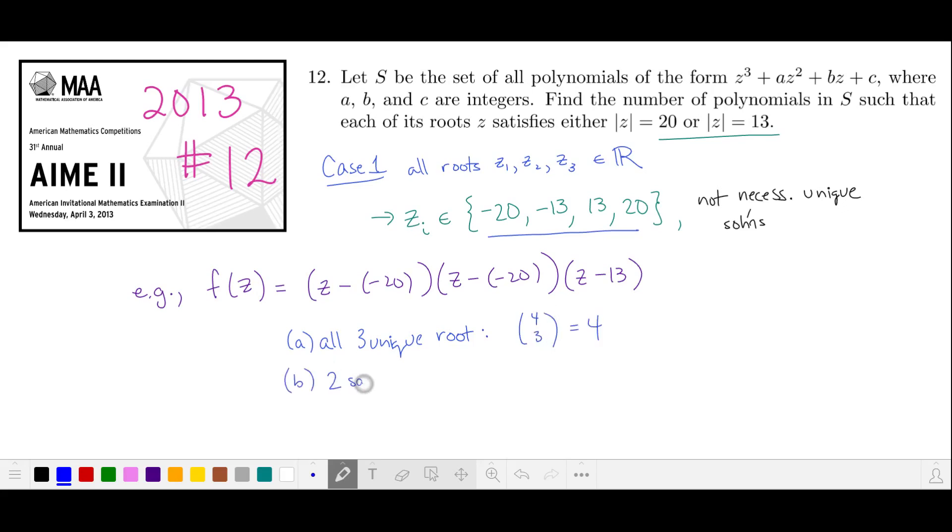We can also have a double root and one that's different like in the example I gave. We have four choices for our double root and then three choices for a different one. And the last category of polynomials have a triple root and there are four choices for that. This gives us a total of 20 polynomials where all the roots are real.